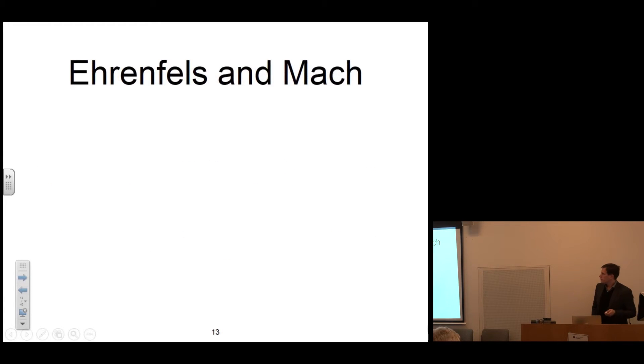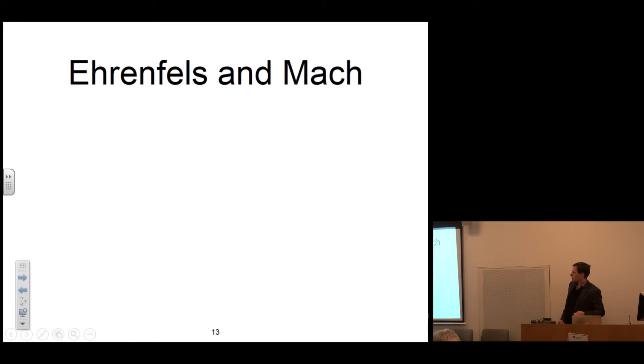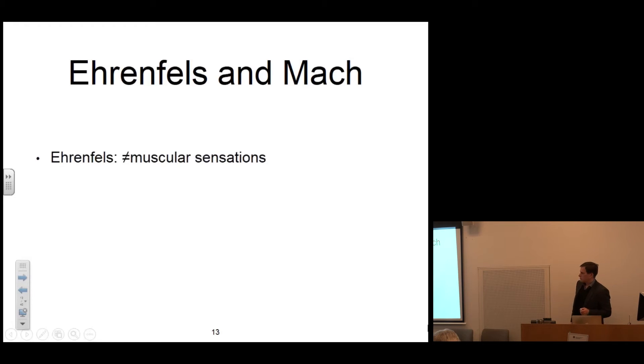The basic idea by Ehrenfels is that Gestalt manifests itself differently than the manifestation of its parts — as something different — and that the Gestalt is a whole which is different from the sum of its parts. This is something called today supersumativity: something being more than the sum of its parts.